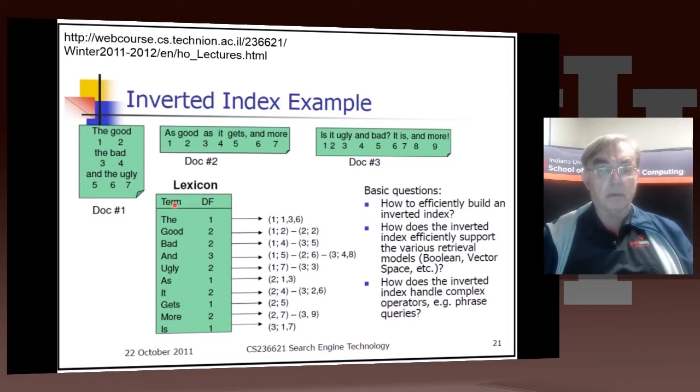Here we have the term. Here we have the number of documents that it appears in. So the appears only in document one, but it appears three times in document one. Good appears in document one and document two. Bad, in a clever index you might even think good and bad ought to be related because one is exactly the opposite of the other. And bad appears in documents one and three twice. So that's the document frequency, remember that's what we need for IDF. And here is the term and its frequency. And as we mentioned, we may also store the location.